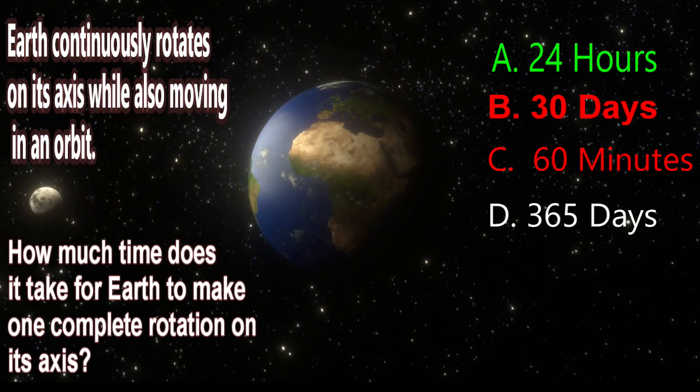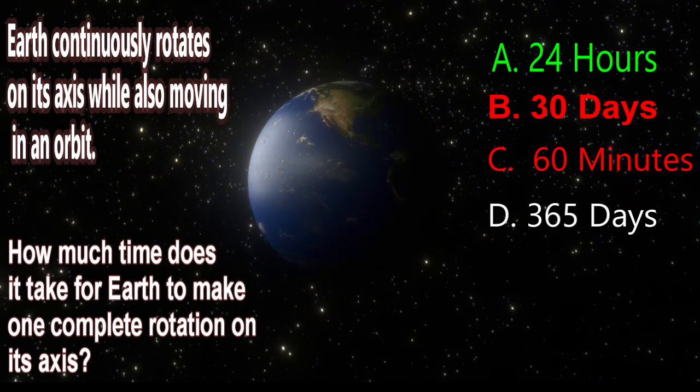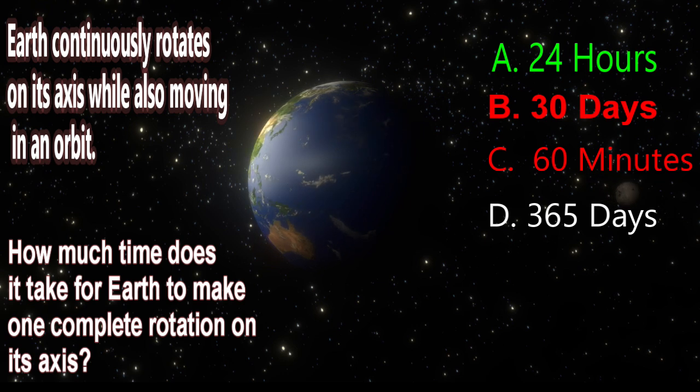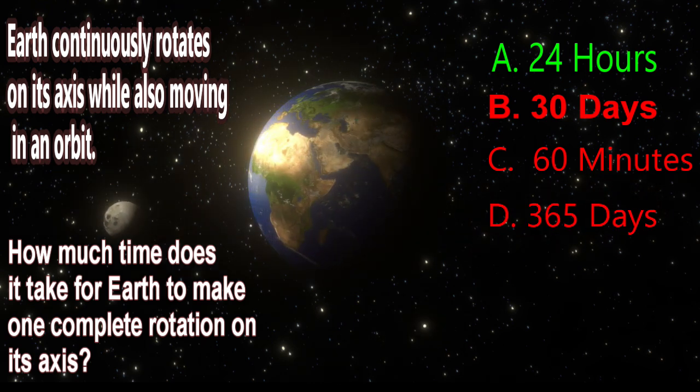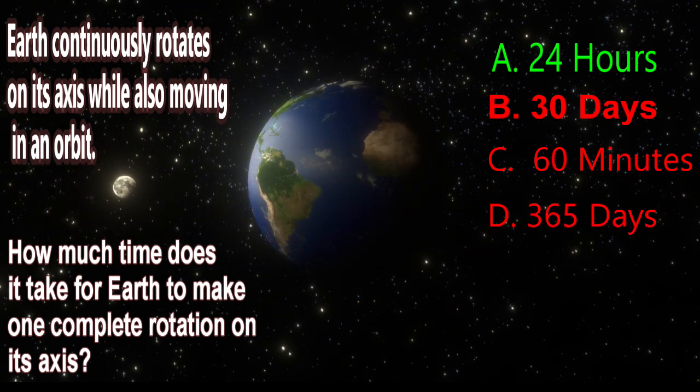D. 365 days is the time it takes Earth to orbit the Sun, one full year. That's Earth's revolution, not its rotation.